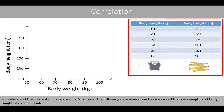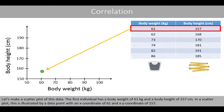To understand the concept of correlation, let's consider data where one has measured the body weight and body height of six individuals. Let's make a scatter plot of this data. The first individual has a body weight of 61 kg and a body height of 157 cm. In a scatter plot, this is illustrated by a data point with an x-coordinate of 61 and a y-coordinate of 157.